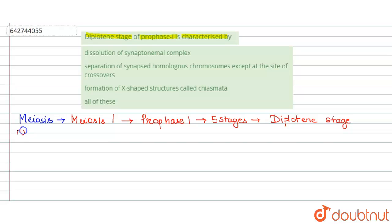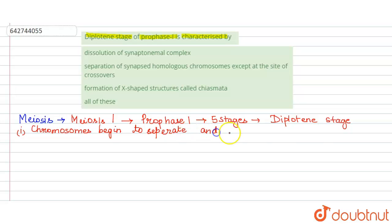In the diplotene stage, the chromosomes begin to separate — this is the separation of the synapsed homologous chromosomes — and terminalization starts. So the chromosomes start separating and terminalization occurs.